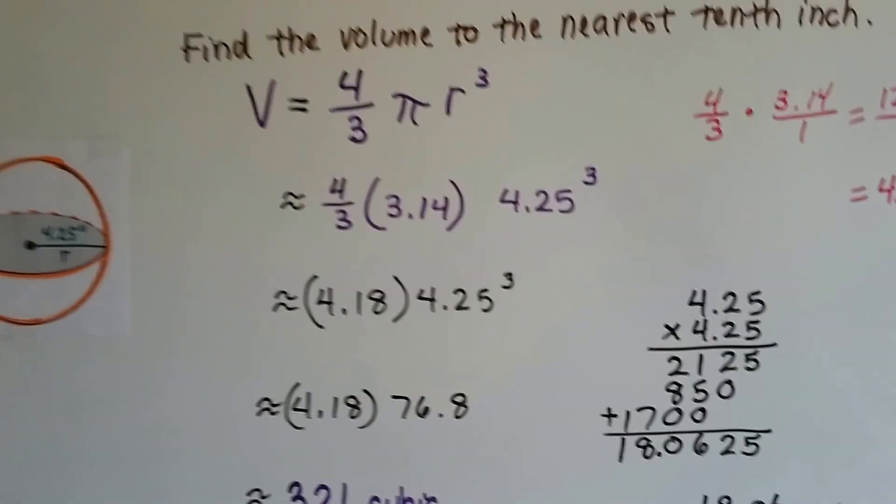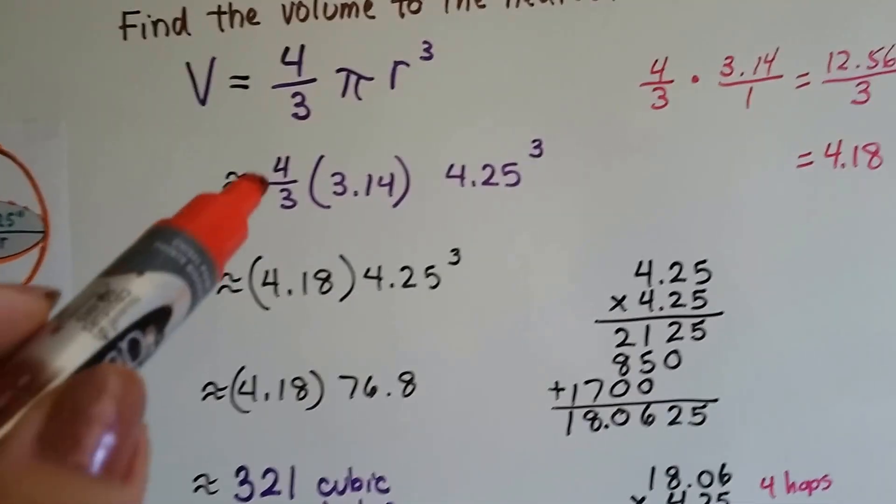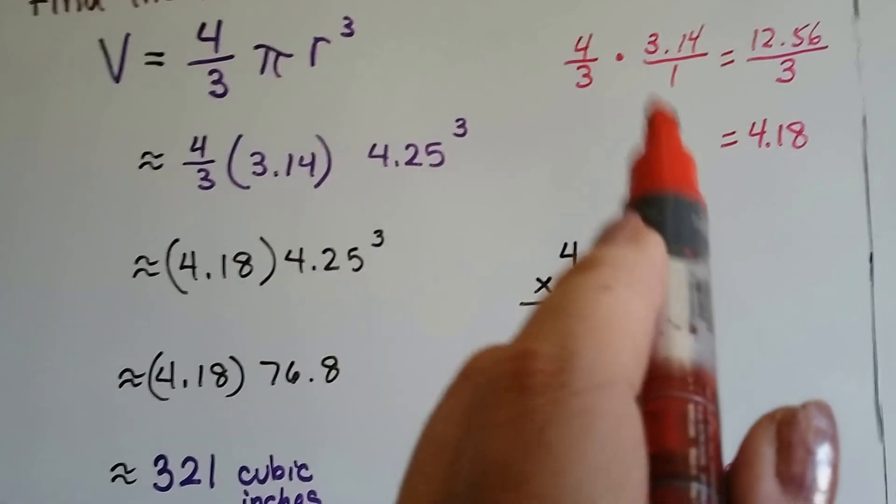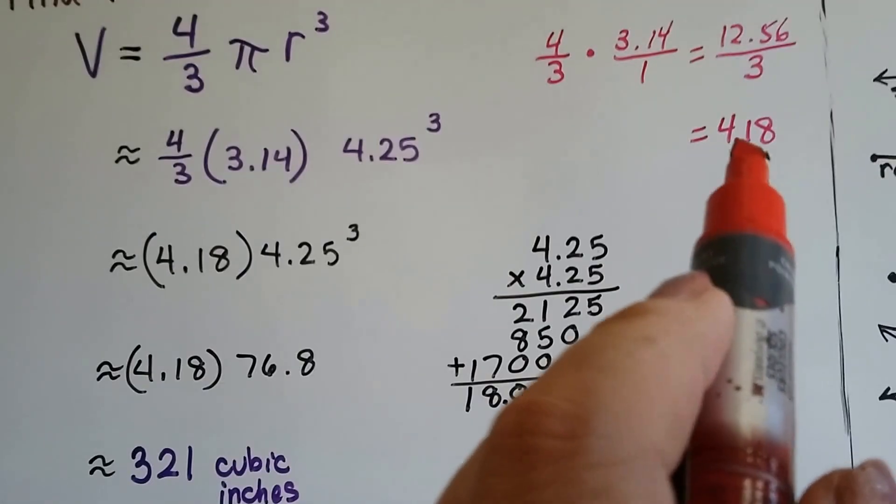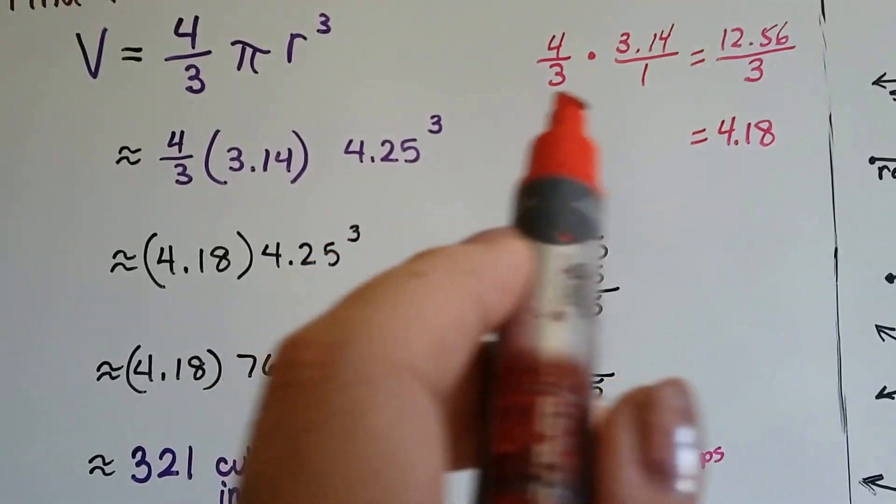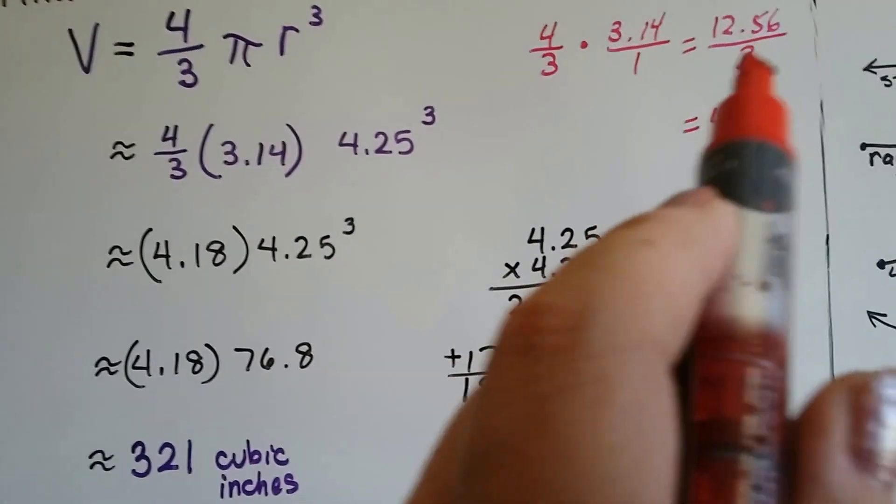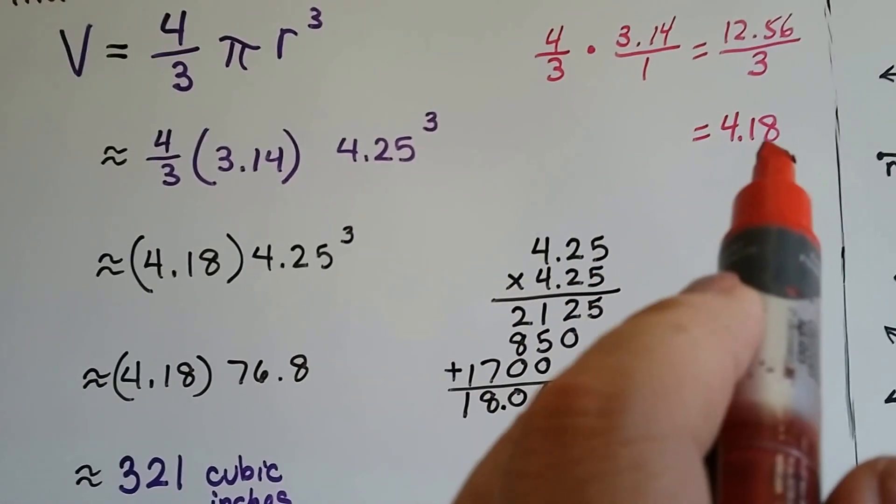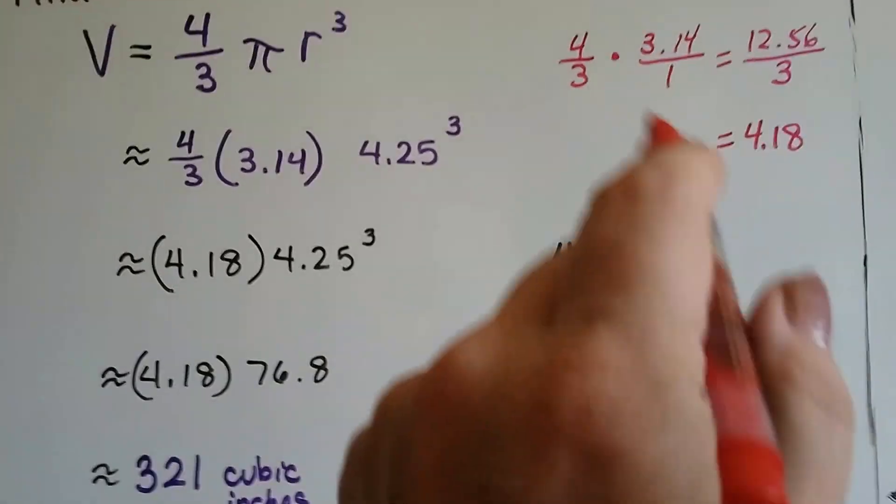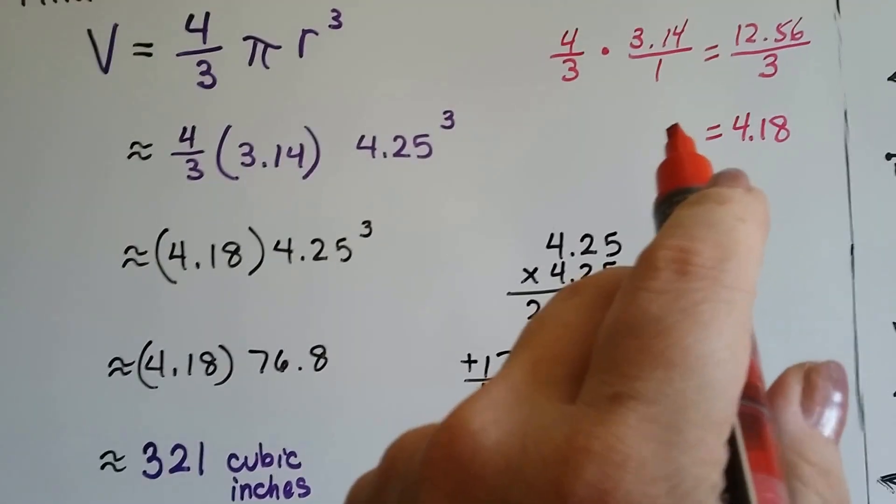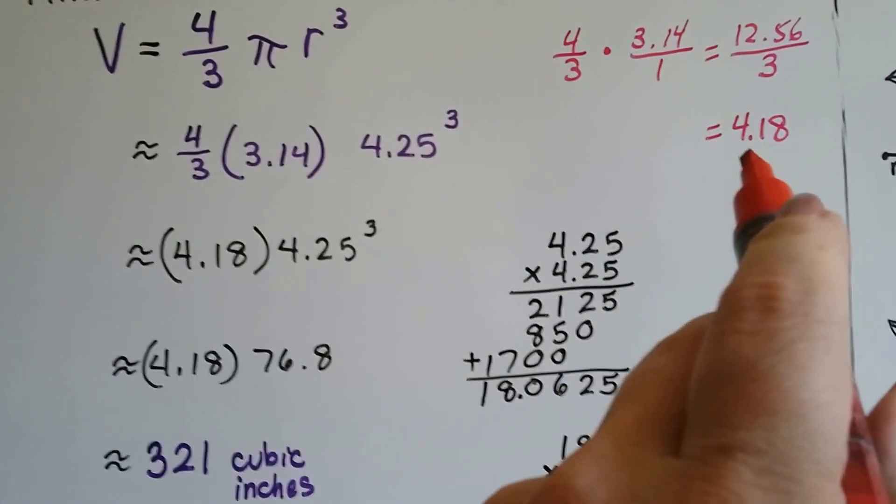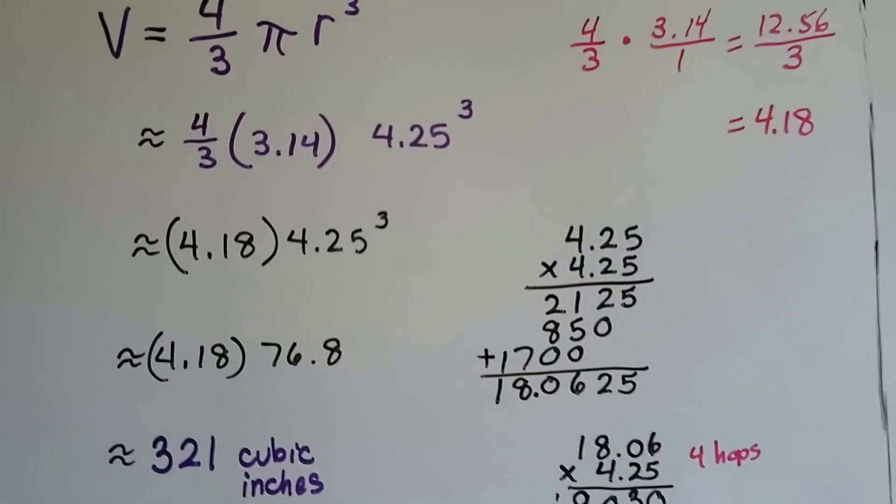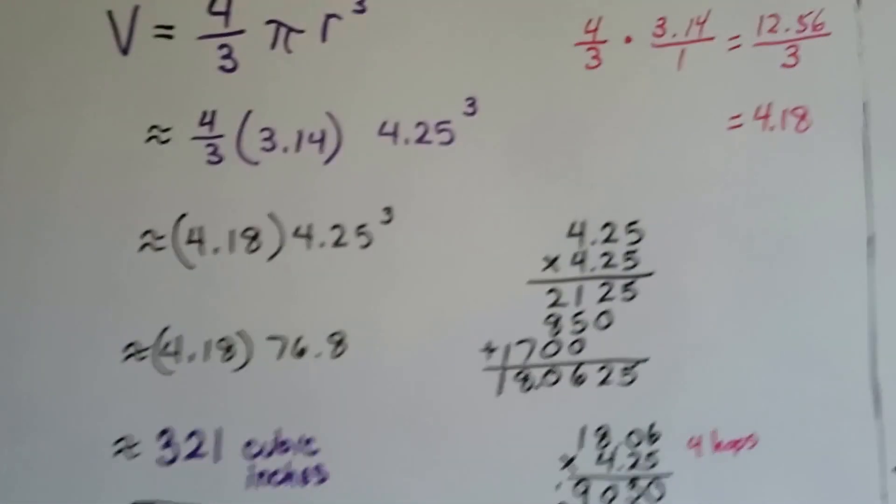When we're doing these volume formulas, it's really smart to write in your notes that 4/3 times π is going to come out as 4.18. It comes out to 12.56 over 3, and when you do that division, it equals 4.18. If you write this 4/3 times π equals 4.18 on the inside cover of your spiral or folder, you're not going to have to keep doing that math over and over again. It's really good to know what 1/3, 2/3, and 4/3 times π is in your notes, so you can just quickly go to it. Just make sure you have your work shown in your notes so you can copy that too.